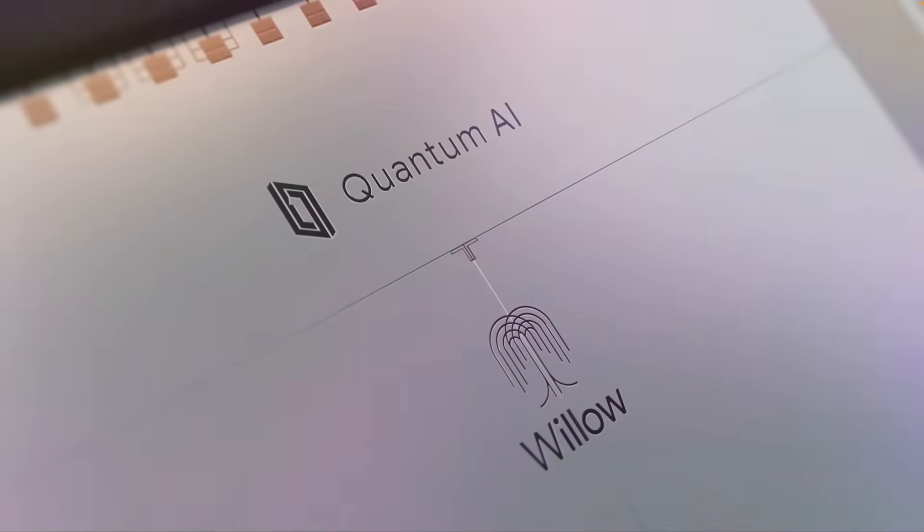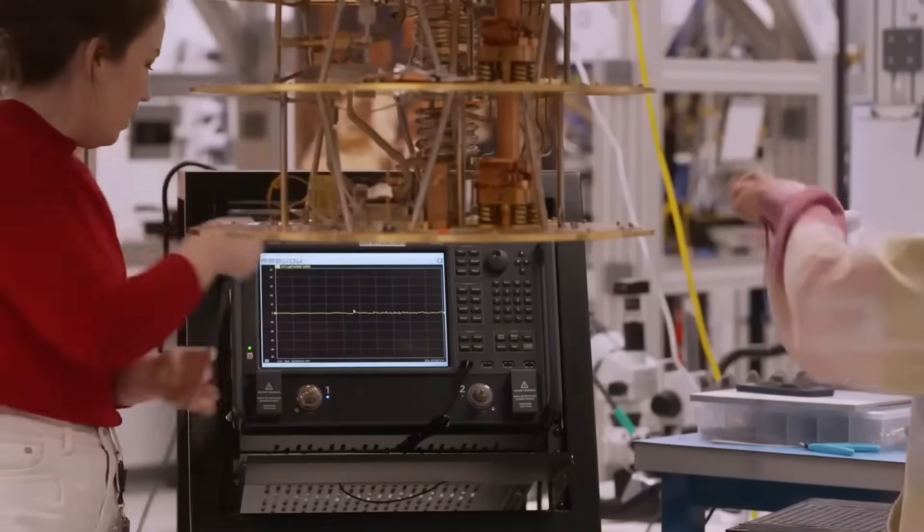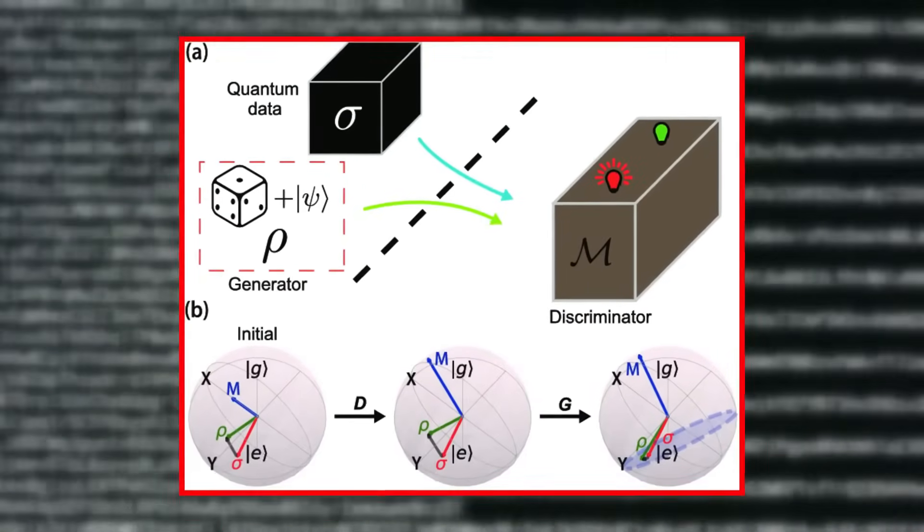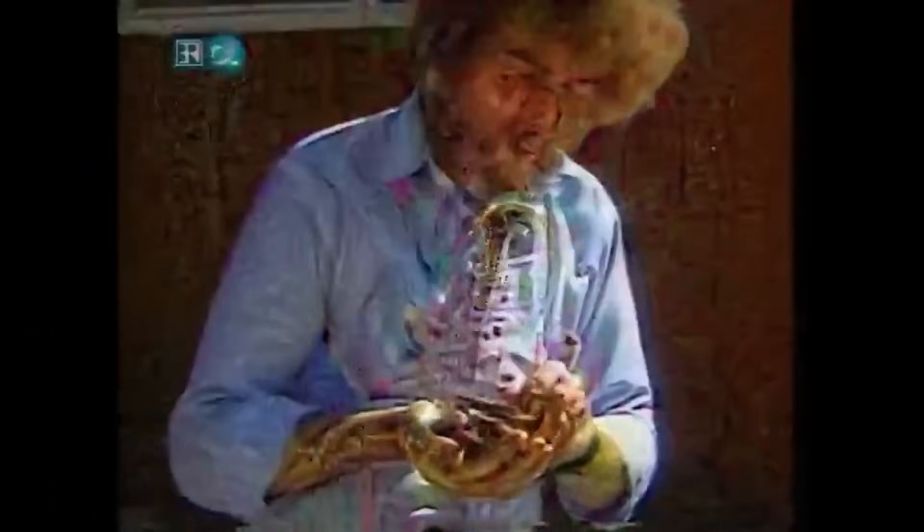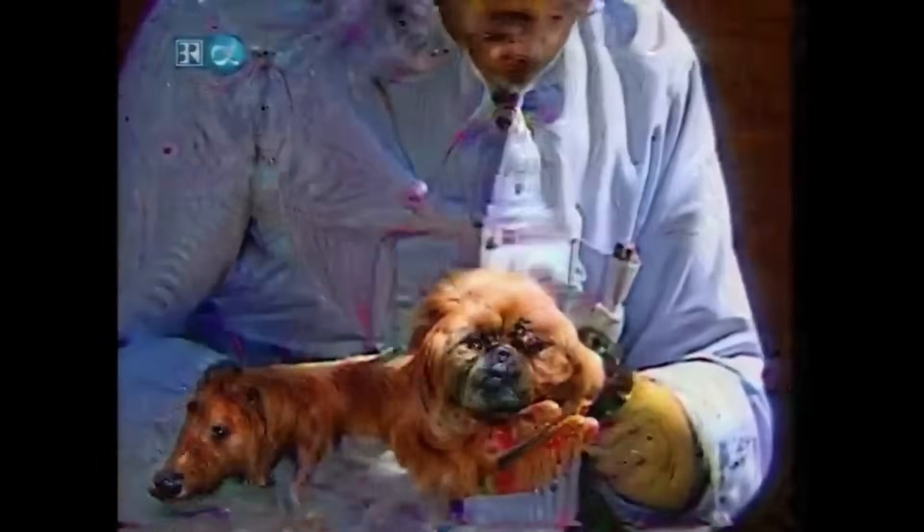The lab had been testing a cutting-edge QGAN, Quantum Generative Adversarial Network. Like AI systems that create surreal images from noise, this quantum version worked within the strange domain of qubits and superposition.